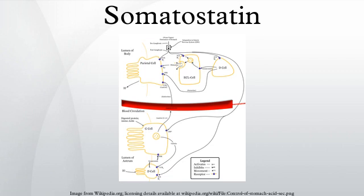Somatostatin regulates insulin and glucagon. Somatostatin has two active forms produced by alternative cleavage of a single pre-pro-protein: one of 14 amino acids, the other of 28 amino acids.